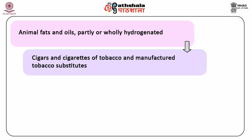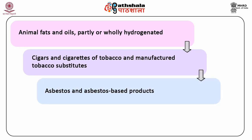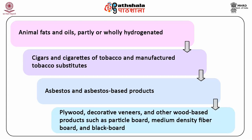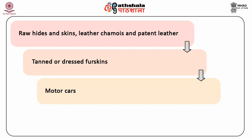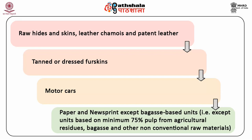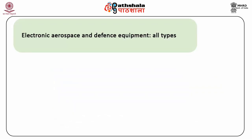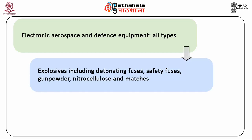Cigars and Cigarettes of Tobacco and Manufactured Tobacco Substitutes; Asbestos and Asbestos-based Products; Plywood, Decorative Veneers and other wood-based products such as Particle Board, Medium Density Fibre Board and Blackboard; Raw Hides and Skins Leather, Samoa and Patent Leather, Tanned or Dressed Furskins; Motor Cars; Paper and Newsprint except bagasse-based units, i.e., except units based on minimum 75% pulp from agricultural residue, bagasse and other non-conventional raw materials; Electronic, Aerospace and Defence Equipment; all types of explosives including detonating fuses, safety fuses, gunpowder, nitrocellulose and matches, as well as hazardous chemicals.